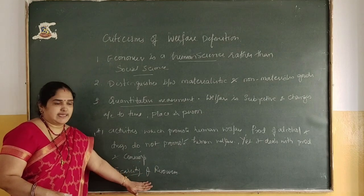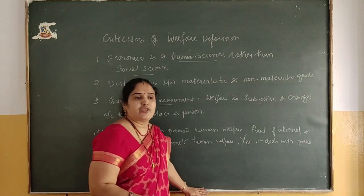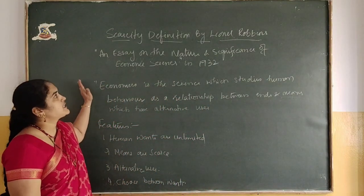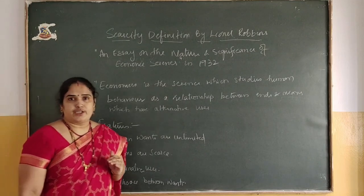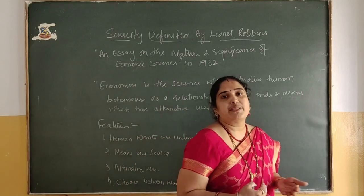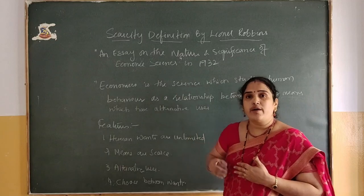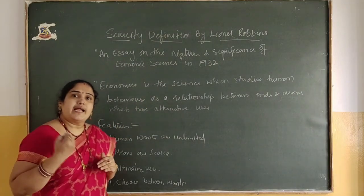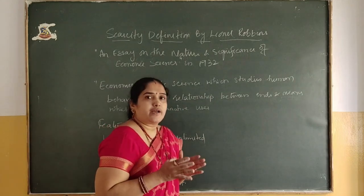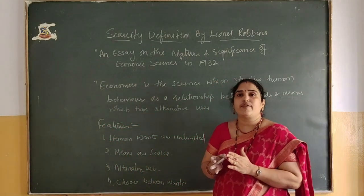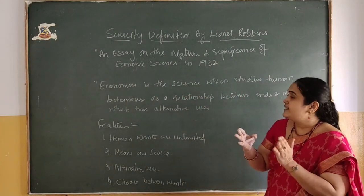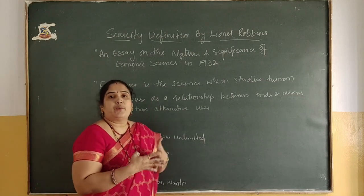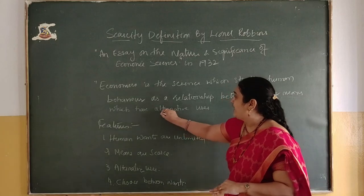Marshall's definition was criticized by Lionel Robbins in his book 'Essay on the Nature and Significance of Economic Science' in 1932. Seeing the definitions given by earlier economists Adam Smith and Alfred Marshall, Lionel Robbins formulated his own definition and regarded economics as the science which studies human behavior and the relationship between ends and means which have alternative uses. According to Robbins, economics regards the satisfaction of human wants — we have unlimited wants — and it is the relationship between unlimited wants, limited resources, and resources which can have alternative uses.